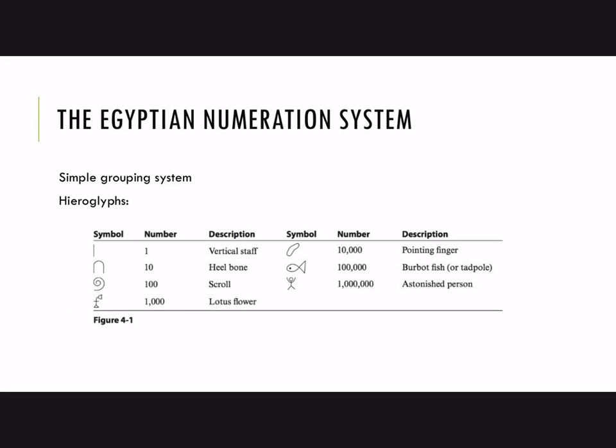Here's a historical example: the Egyptian numeration system. They used a system of hieroglyphs, and this is a figure from your textbook. You can see we have symbols for 1, 10, 100, 1,000, 10,000, 100,000, and then finally — my favorite — an astonished person for 1,000,000, I suppose because that was a very large quantity. Same idea: if we wanted to represent numerals, we would use these symbols and just repeat them over and over as many times as needed.